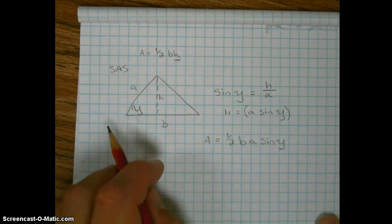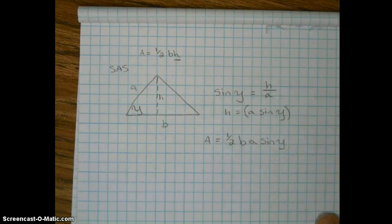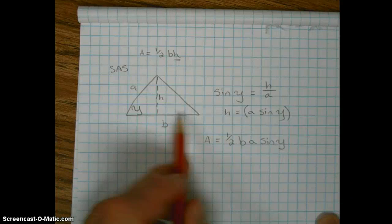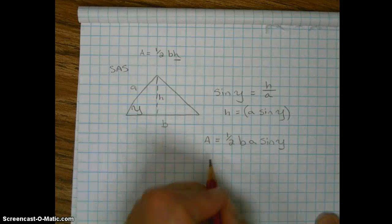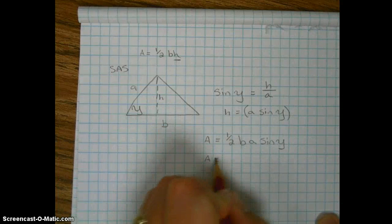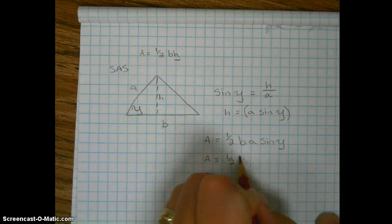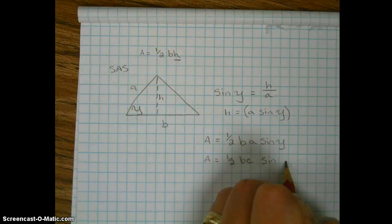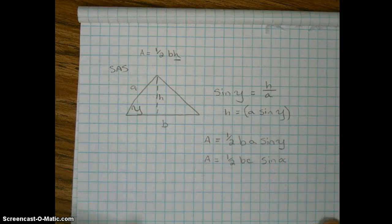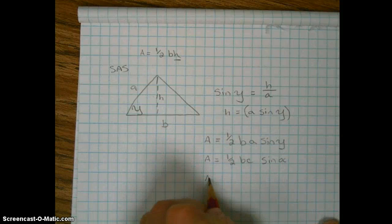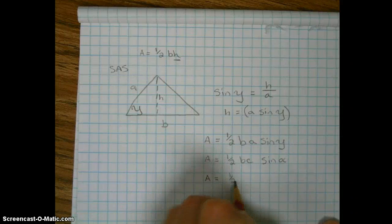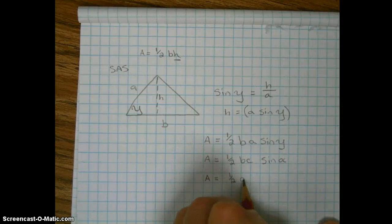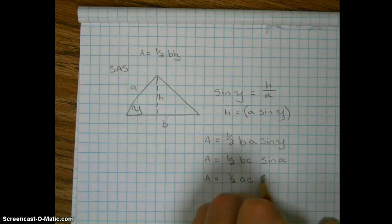The other formulas can also be found similarly. A equals one-half B times C times the sine of alpha, and finally the third one A equals one-half A times C times the sine of beta.